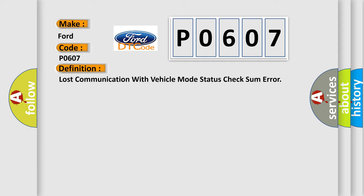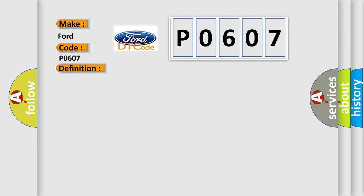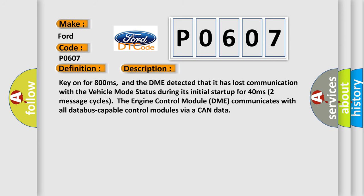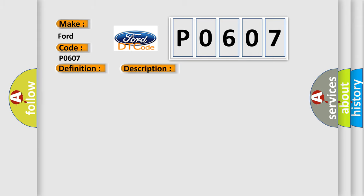The basic definition is: Lost communication with vehicle mode status check — some error. Here is a short description of this DTC code: Key on for 800 milliseconds, and the DME detected that it has lost communication with the vehicle mode status during its initial startup. For 40 milliseconds — two message cycles — the engine control module DME communicates with all data bus-capable control modules via a CAN data bus. This diagnostic error occurs most often when the DME has a failed terminal resistance for the CAN bus.